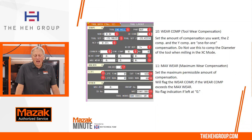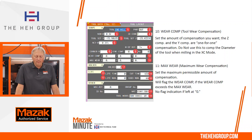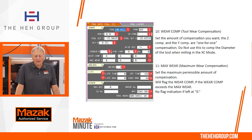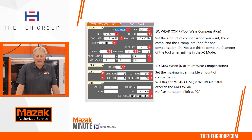Number ten is the wear comps. Here we can set the wear compensation for the Z axis comp and the Y axis comp — it's one for one. It's important to know that if you're in XC mode in Mazatrol programming, it's not recommended that you use the X wear comp because it's not going to give you a correct flat milled surface. Instead, use the actual diameter and modify that size, which will still give you the straight line.